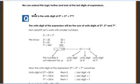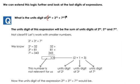We have seen how to find the units digit of some numbers when they are raised to some powers. Let us extend this logic further and use it to find the units digit of some expressions. What would be the units digit of this expression: 2 power 83 plus 3 power 92 plus 7 power 29?